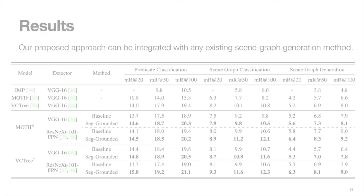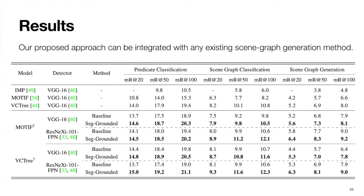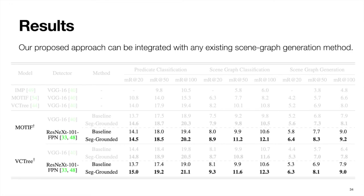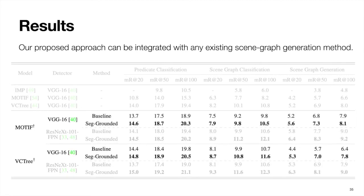We now discuss some of the quantitative results in the paper. We use the Motif and VCTree methods as baselines for comparison. Using a ResNet backbone in the object detector, our method showed significant boost in performance across all three tasks on both baselines. We also observe similar improvement in performance when using a VGG-based backbone in the object detector.